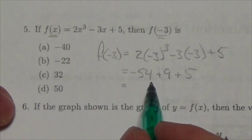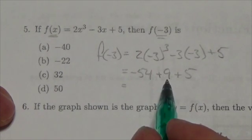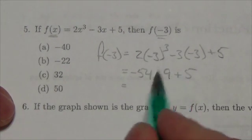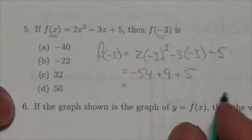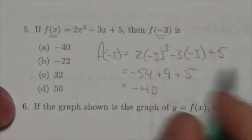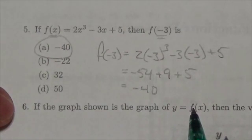So what do we got here? We've got negative 54 plus 9 plus 5. Well, this is plus 14. So negative 54 plus 14, that's looking like negative 40 to me. And so the answer here would be A.